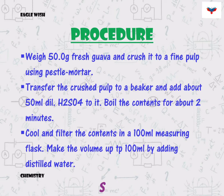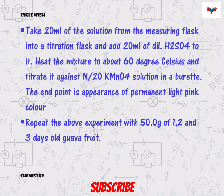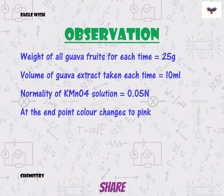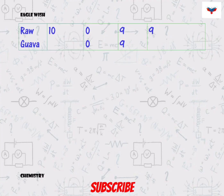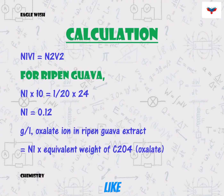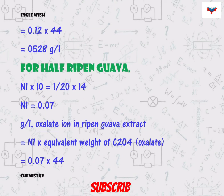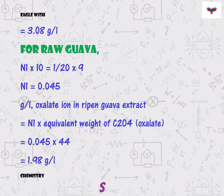In the procedure section we will mention the steps to determine oxalate ions in guava. At the end of the procedure we will write the observation of our experiment. In the calculation section we will calculate the amount of oxalate in ripe guava, half-ripe guava, and raw guava.